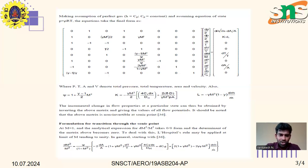The Psi and Chi values represent Mach number values in aircraft gas turbine engines. The incremental changes in flow properties at a particular state can be obtained by inverting the above matrix and giving the values of all potentials. It should be noted that the matrix is not invertible at the sonic point.